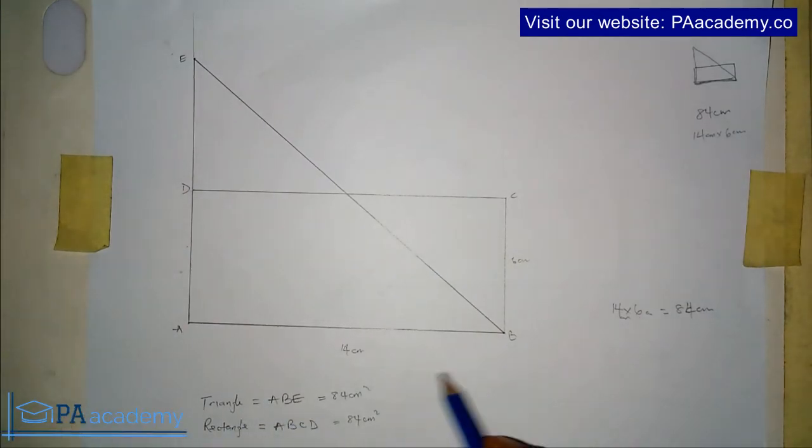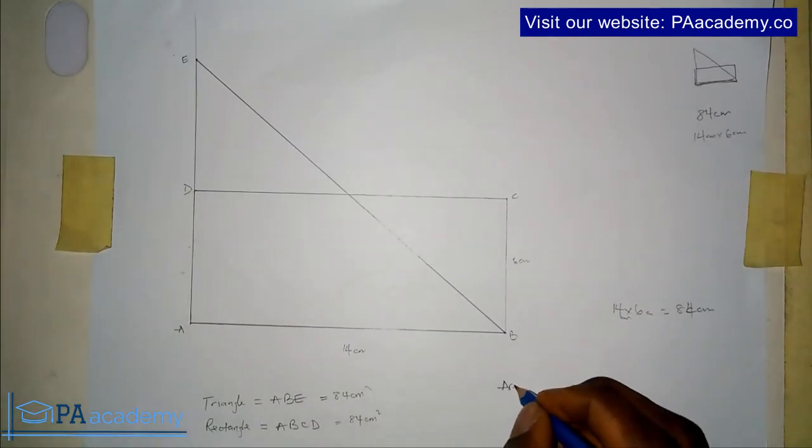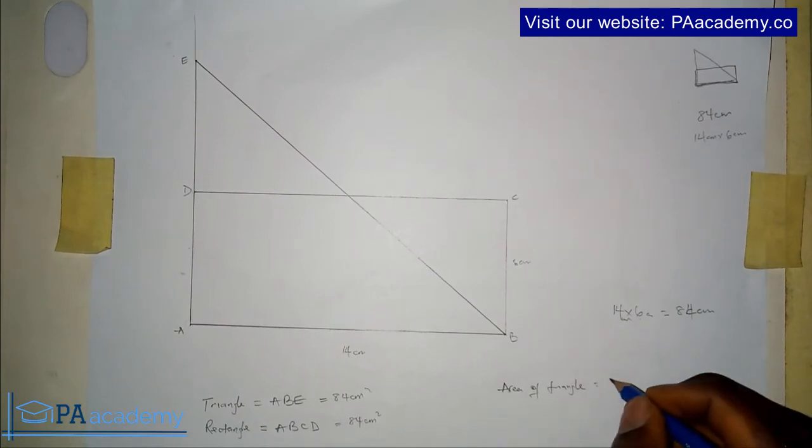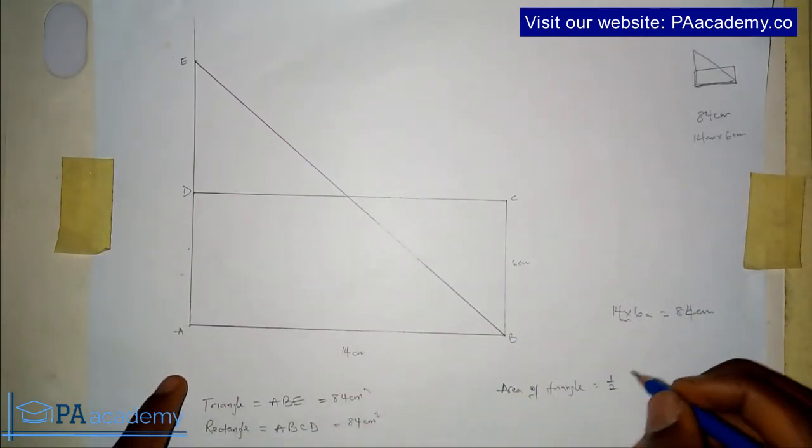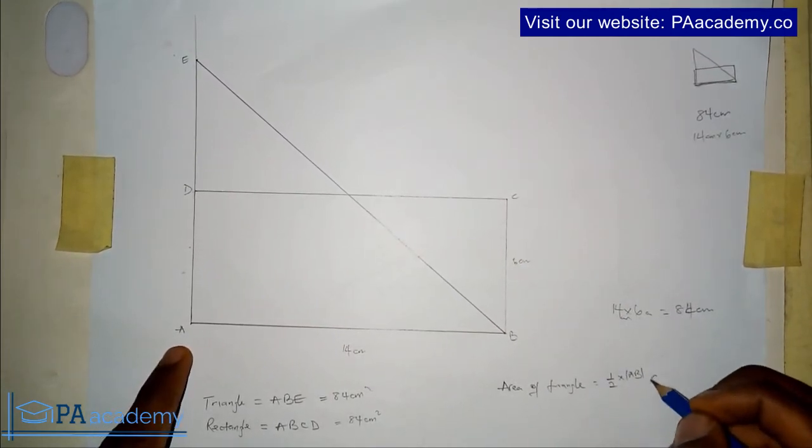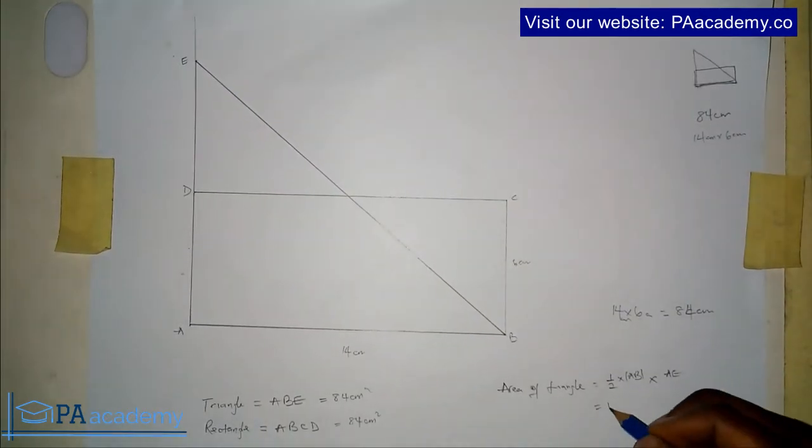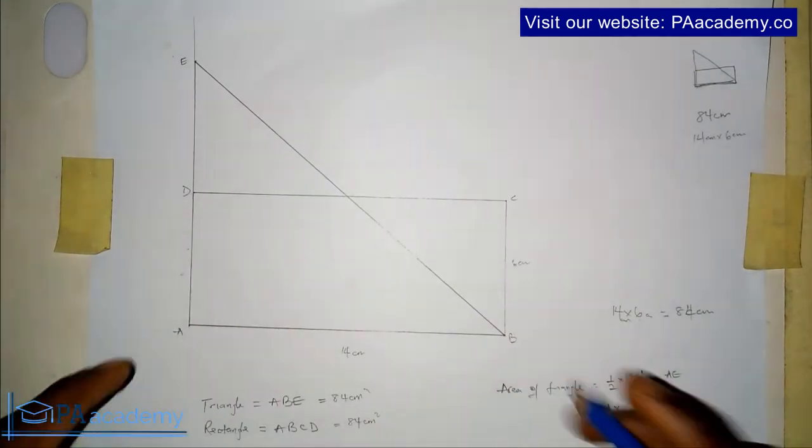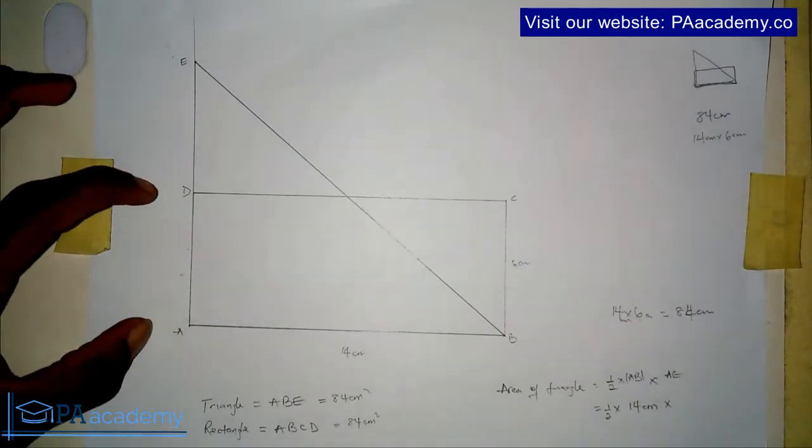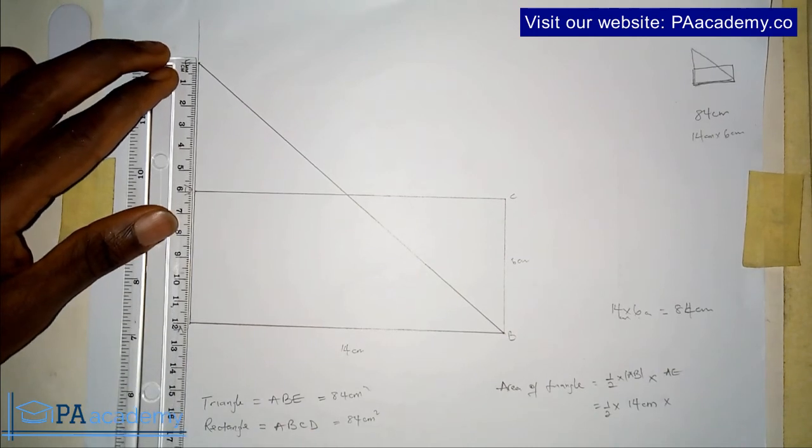We've already confirmed that of the rectangle, that is 14 times 6 to be 84 cm². Let's confirm that of the triangle. For the area of the triangle we have it as: area of triangle equals half base, that is half AB, times the height, that is AE. Let's put in the figures. That will be 1/2 times AB, which is 14 centimeters, then AE. Don't forget AE is twice of DA, so that would be 12 centimeters.